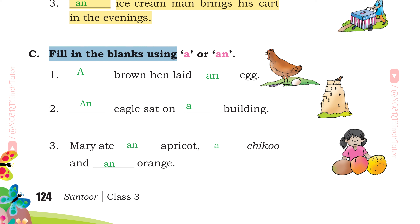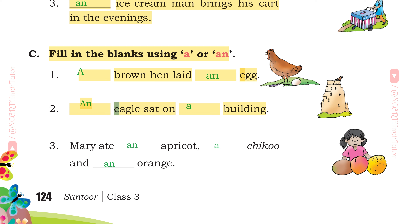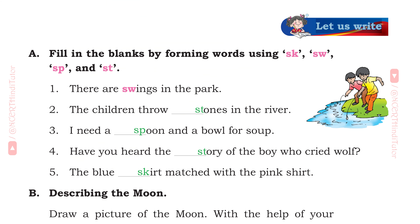C. Fill in the blanks using A or AN. 1st: A brown hen laid an egg — AN is used here because E is a vowel. 2nd: An eagle sat on a building — AN is used here because in eagle, E is a vowel. 3rd: Mary ate an apricot, a cheekoo and an orange — AN is used before apricot because A is a vowel, and AN before orange because O is a vowel.